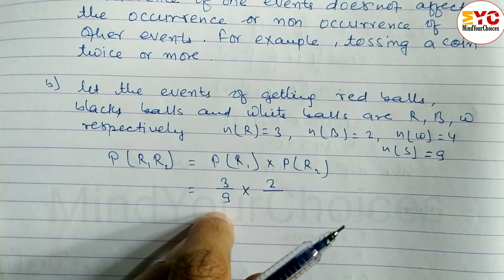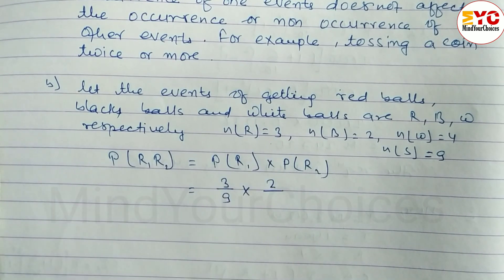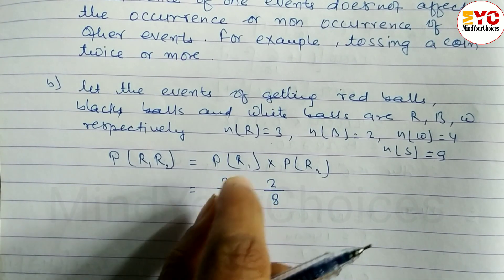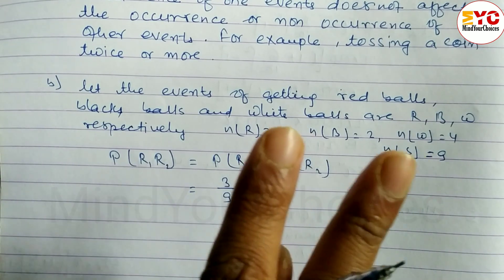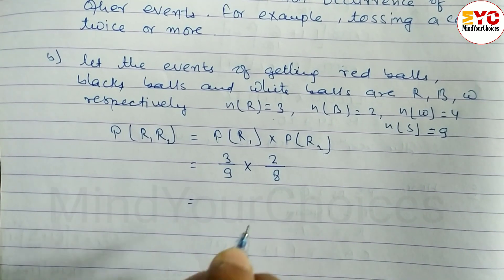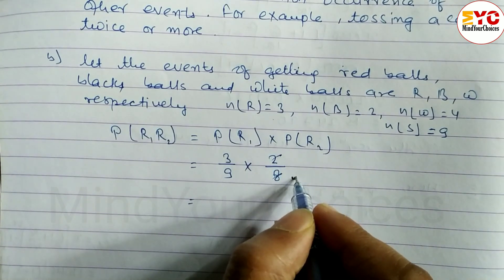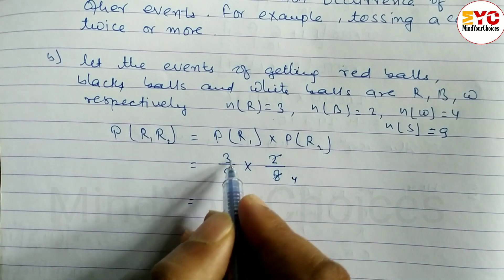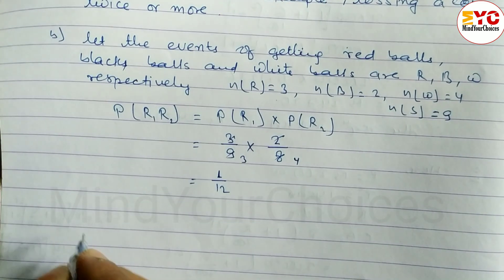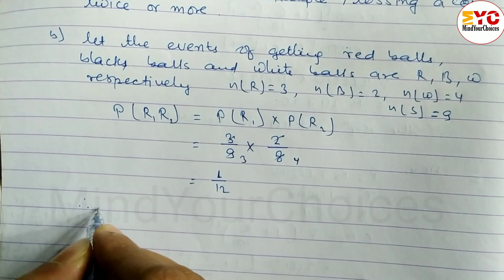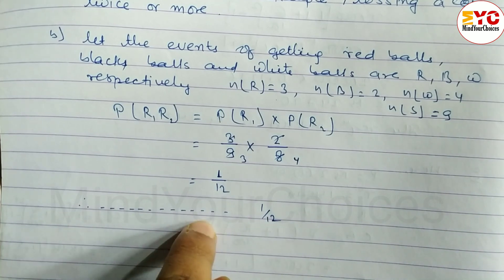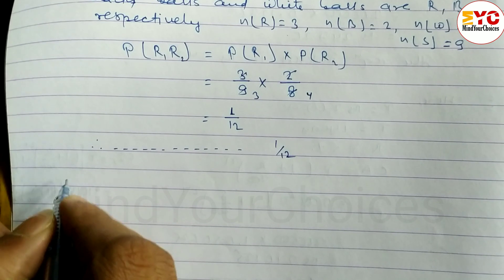So P(R then R) equals: first draw — 3 red balls out of 9 total, so 3 by 9. After taking one red ball, 8 balls remain, and 2 red balls remain, so 2 by 8. Calculating: 3/9 × 2/8 = 6/72 = 1/12. Therefore, the probability of getting both red balls is 1 by 12.